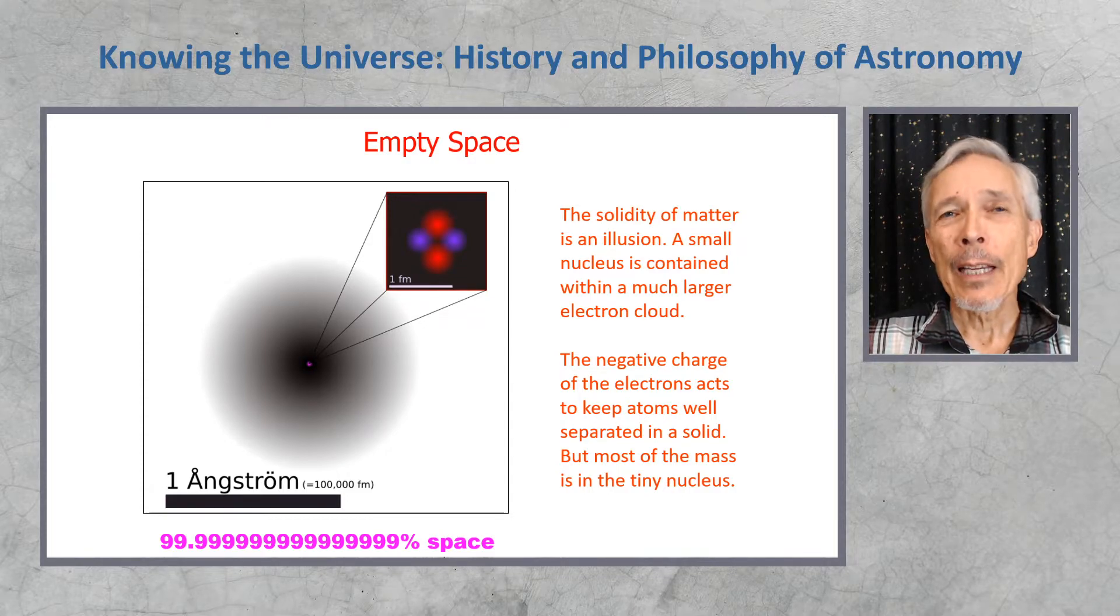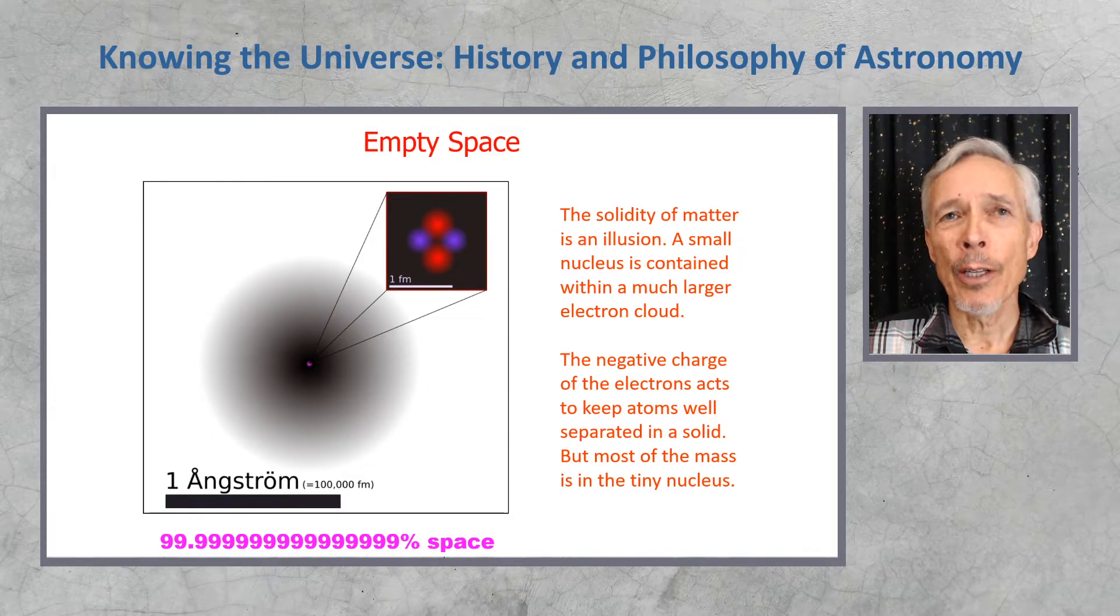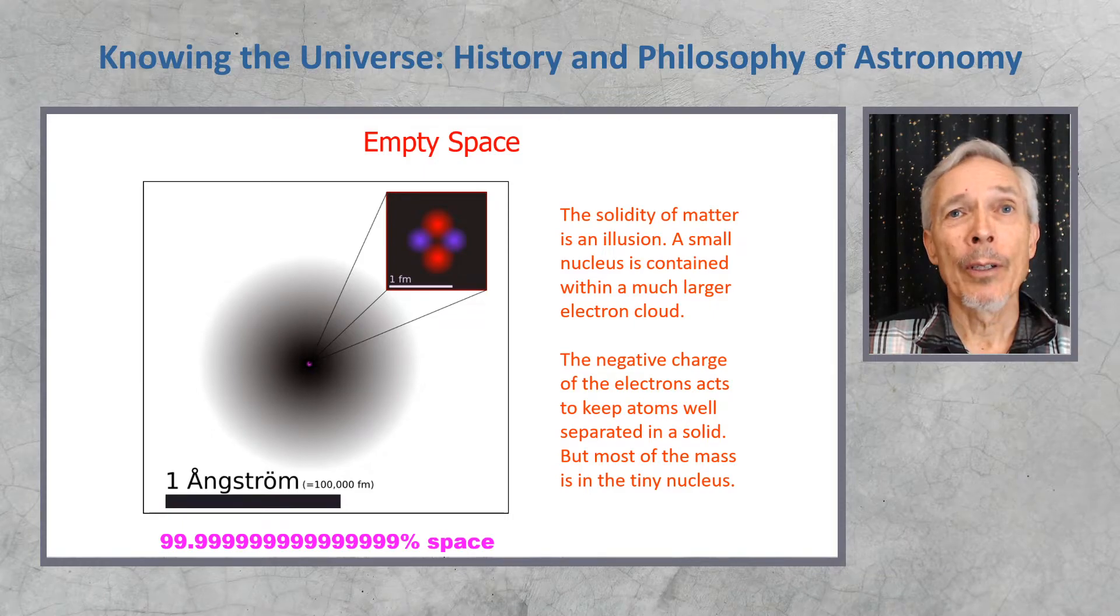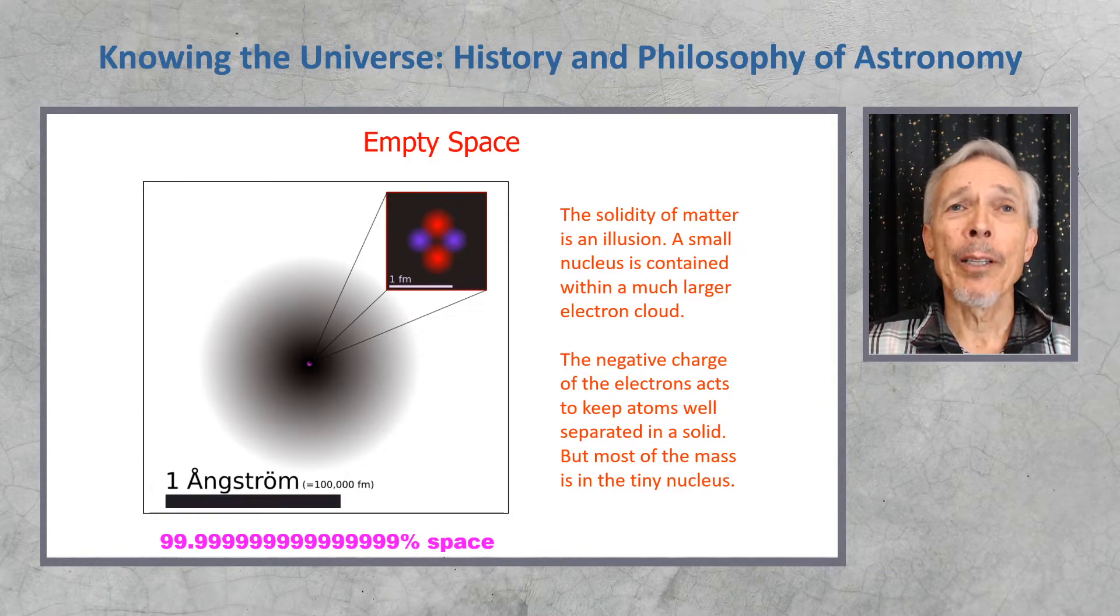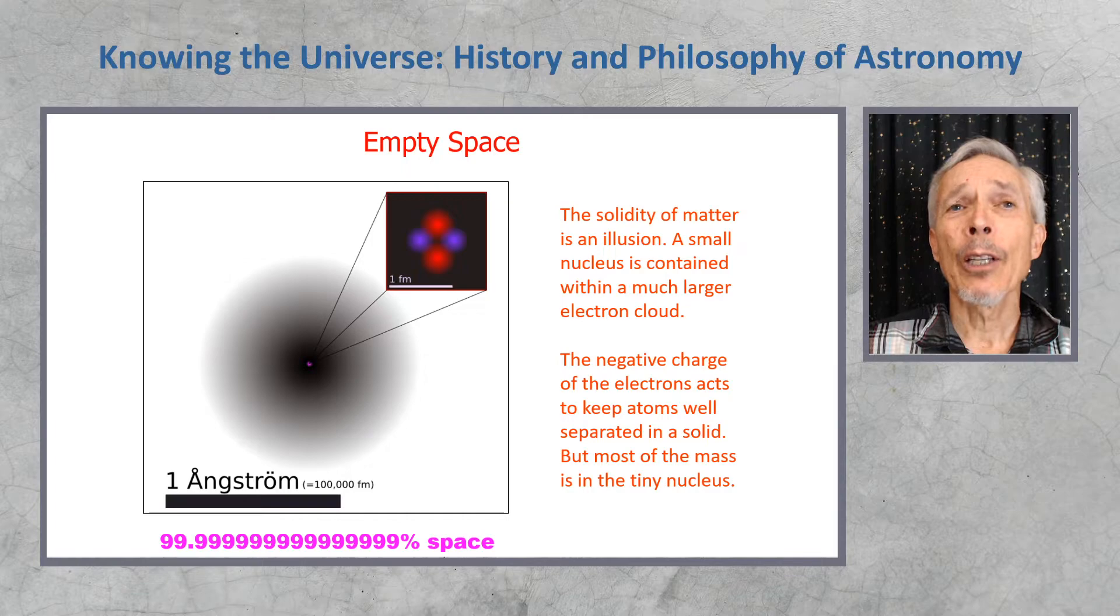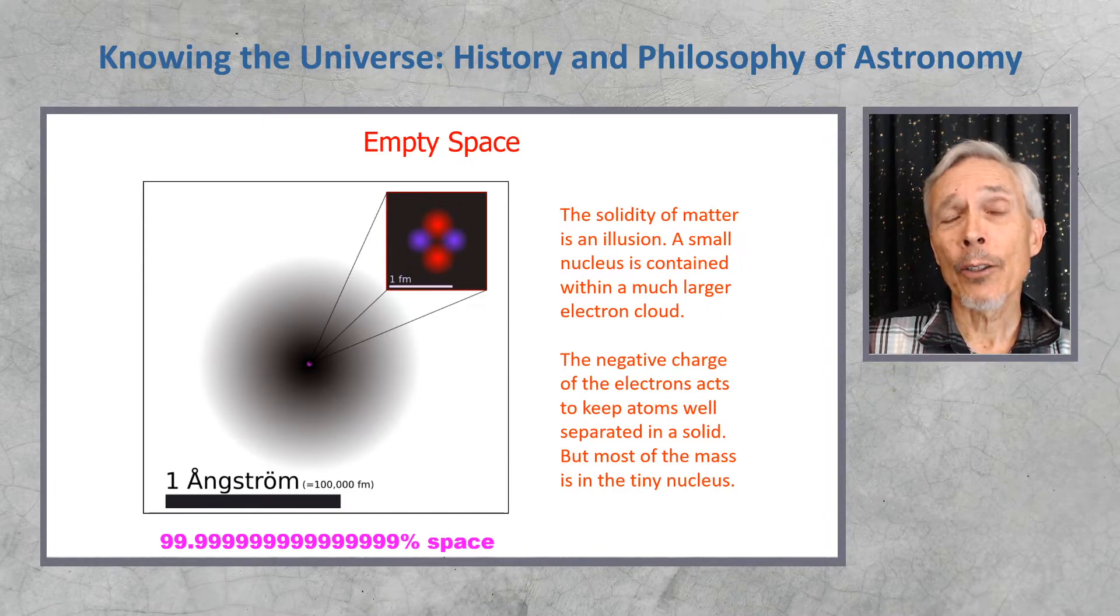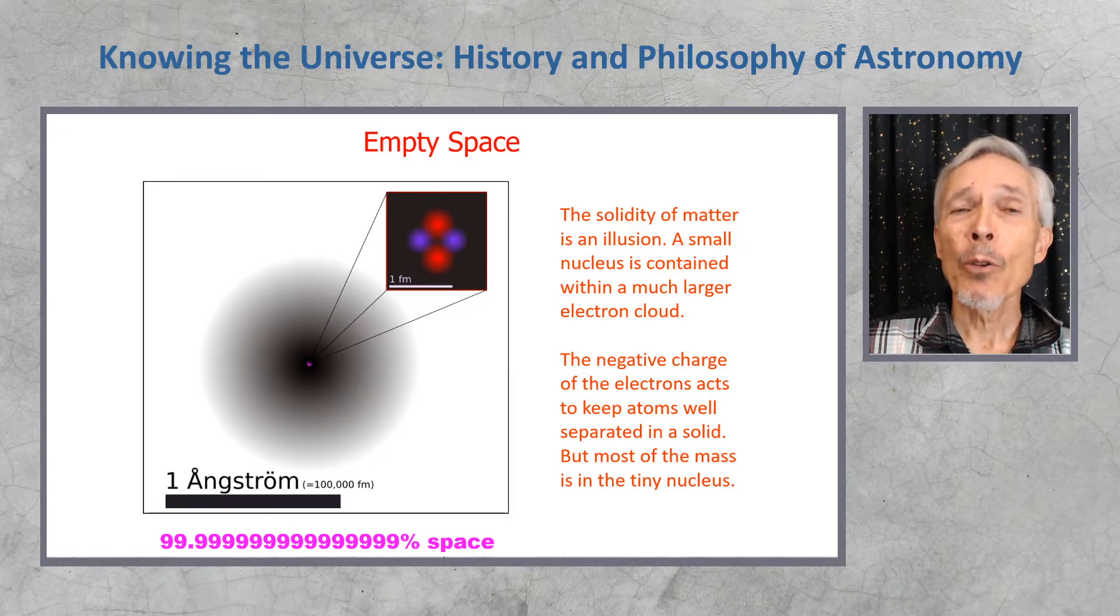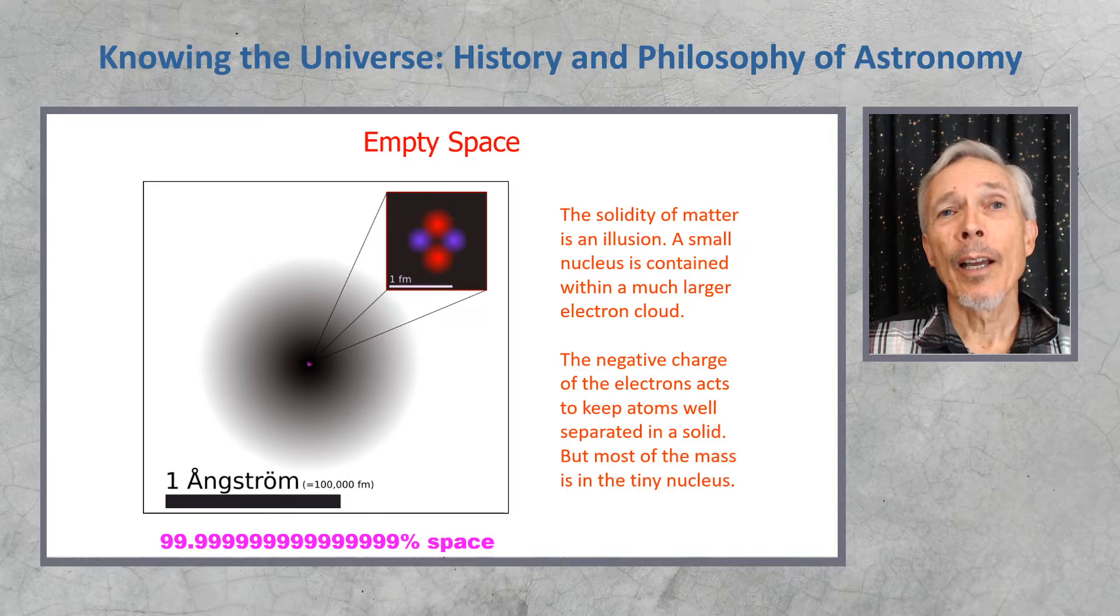He deduced that the entire mass, almost the entire mass of the atom, was concentrated in a small, positively charged nucleus, and the alpha particle being positively charged was interacting by the electrical force, and when it encountered the nucleus, could bounce back out. But since most of the volume was not occupied by the nucleus, the alpha particles generally could pass straight through. The negative charge of the cloud of electrons around the nucleus acts to keep atoms well separated in a solid, because the negative electrical charge of the electrons in one atom repels the electrical charge of electrons in the neighboring atom. But most mass is in the nucleus. And so logically, and by experiment,